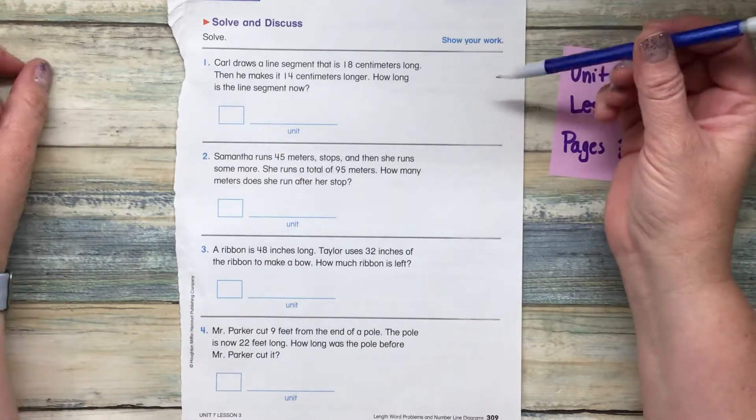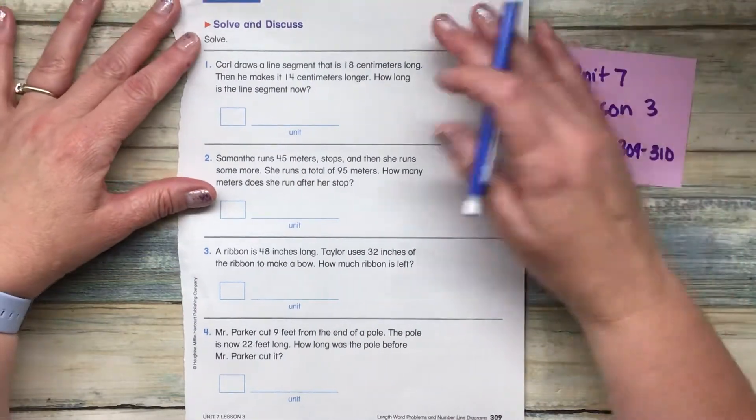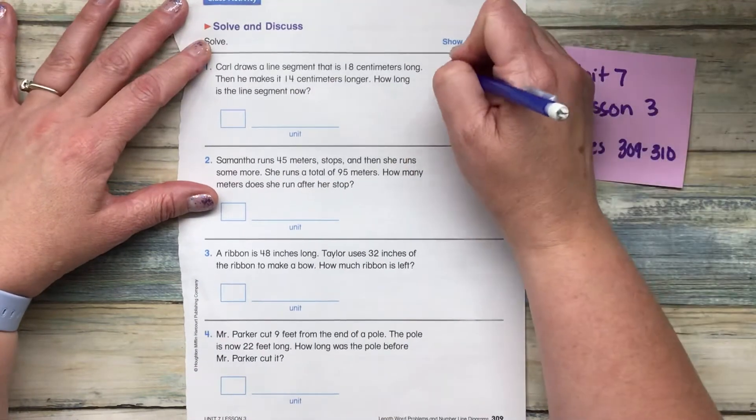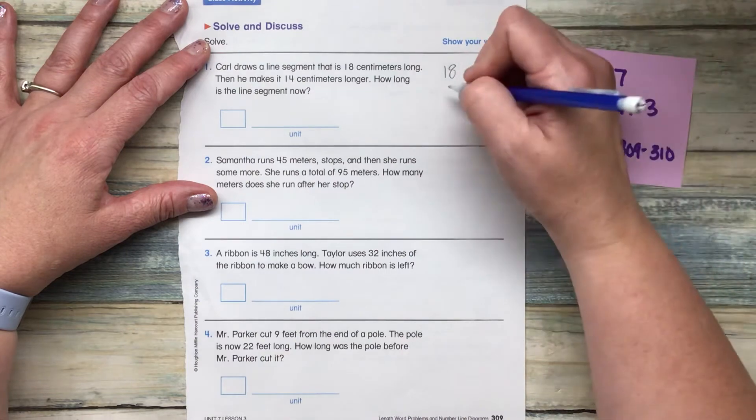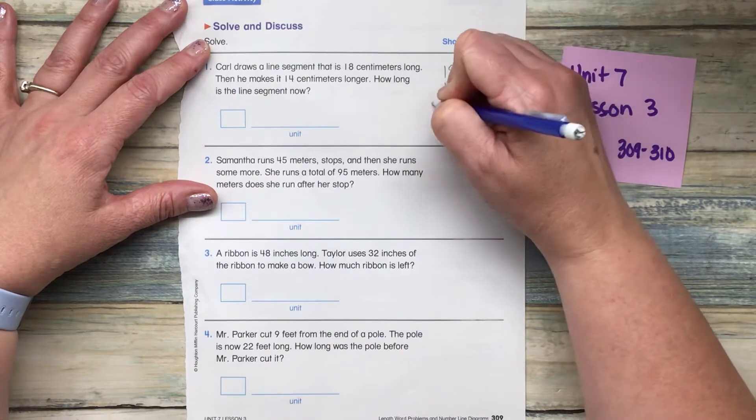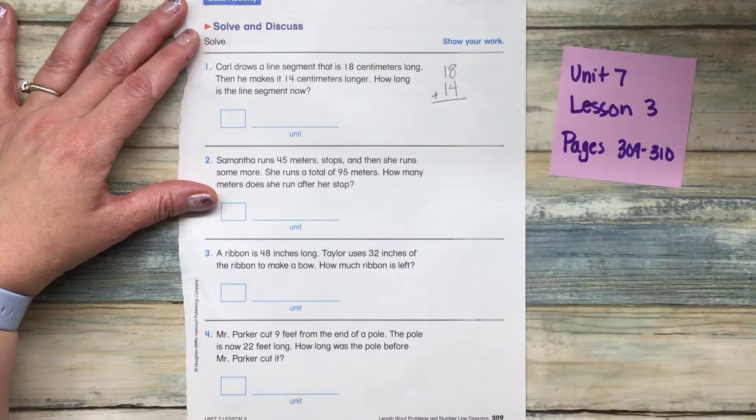Okay, so this first one says Carl draws a line segment that is 18 centimeters long. Then he makes it 14 centimeters longer. How long is that segment now?